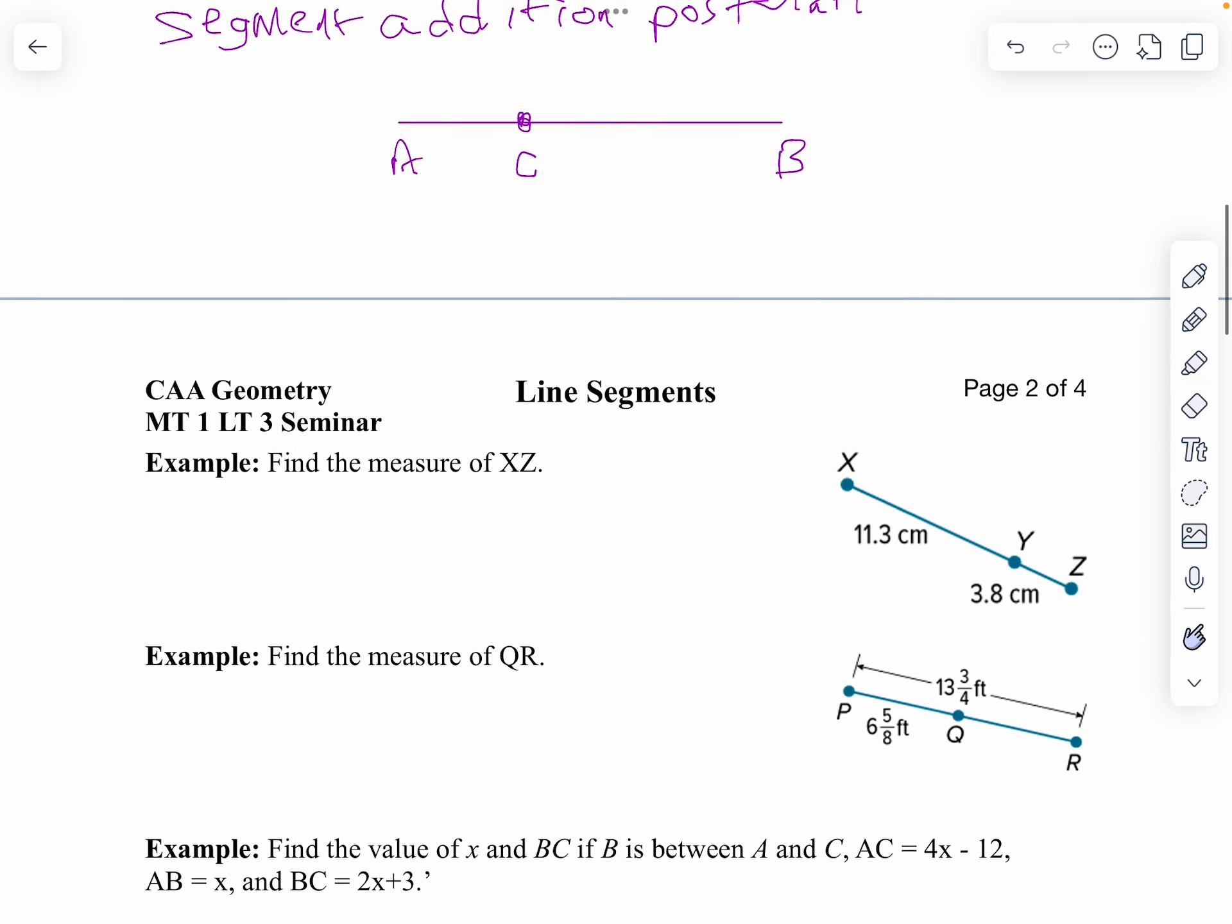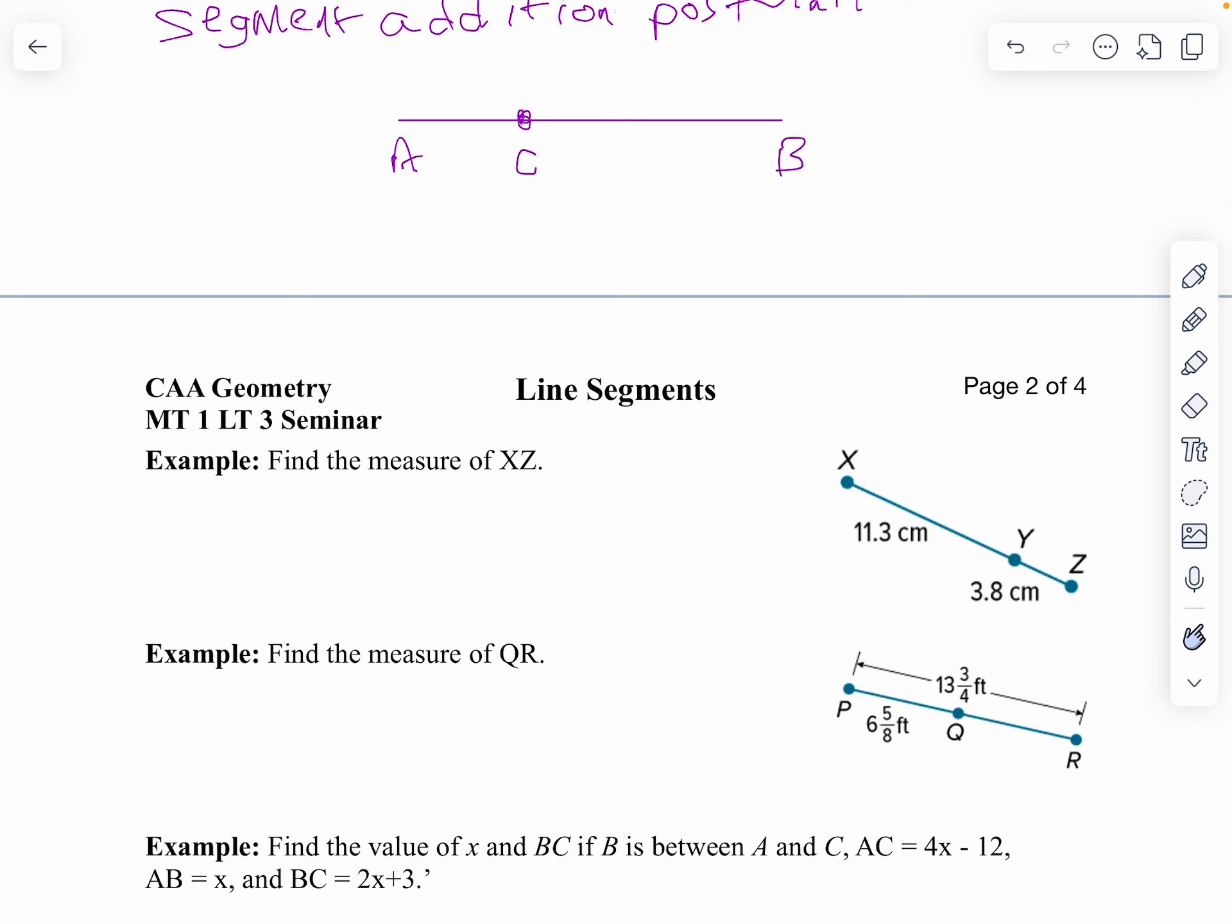Now, let's apply this on a problem. I want to find the measure of XZ. Well, notice X to Z, I can get that by adding XY plus YZ. Well, XY is 11.3 and YZ is 3.8. Well, if I add 11.3 plus 3.8, we get 15.1. There are units in this question, so let's make sure we put centimeters in there. And there is our answer. So, XZ is 15.1 centimeters.